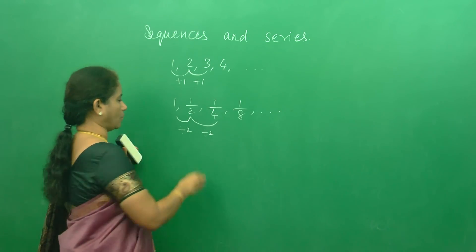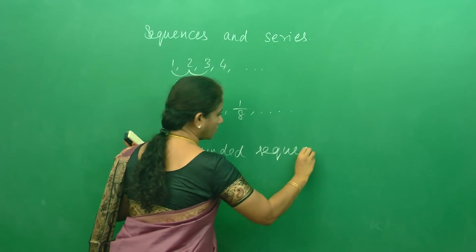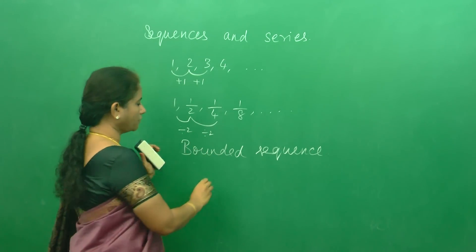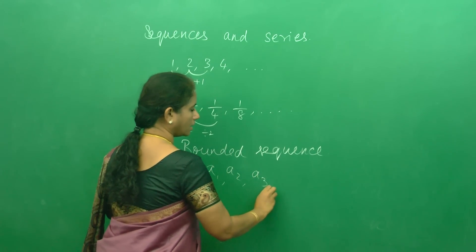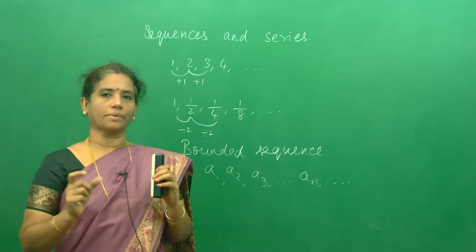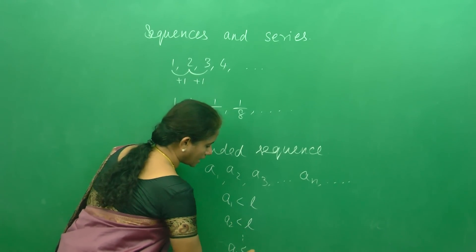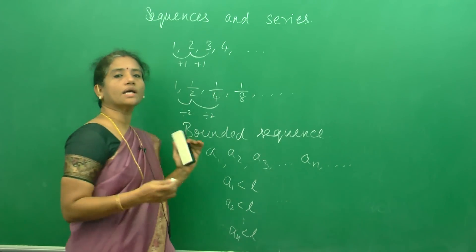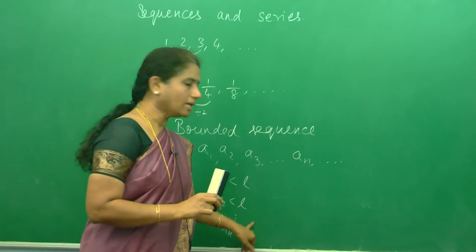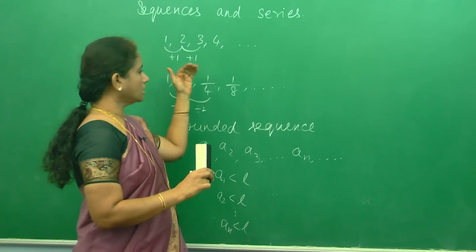Now we will discuss what is a bounded sequence. What is the common meaning of bounded? Bounded means you have an upper bound or you can have a lower bound also. Suppose the terms of the sequence are a1, a2, a3, ..., an, and if each term of the sequence is less than a particular number L — for example a1 < L, a2 < L, and so on — then the sequence is called a bounded sequence. We are supposed to find that number L to say whether the sequence is bounded or not.